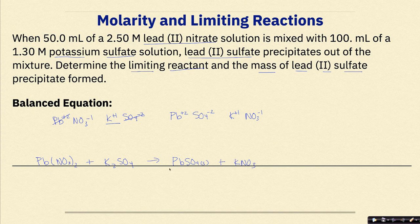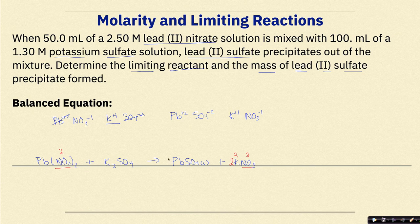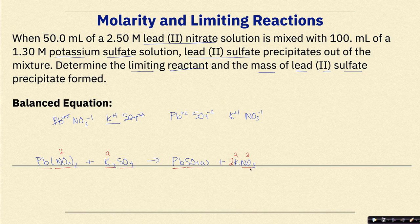Now let's balance this. There are 2 NO₃ groups in Pb(NO₃)₂, and only 1 NO₃ in KNO₃, so I put a 2 in front of KNO₃. That gives 2 potassium on the product side, and there are already 2 potassium in K₂SO₄ — balanced. SO₄: 1 on each side — good. Pb: 1 on each side — good. So the only change needed was placing a 2 in front of KNO₃. Balanced equation: Pb(NO₃)₂ + K₂SO₄ → PbSO₄ + 2 KNO₃.